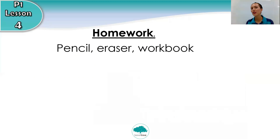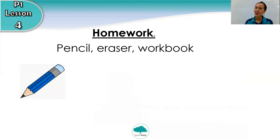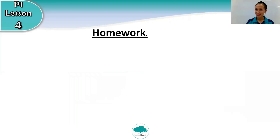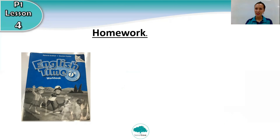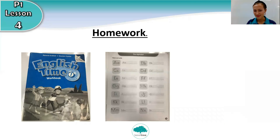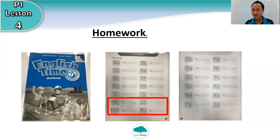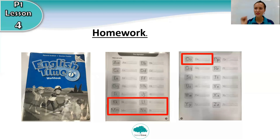It's time for your homework. I want you to get your pencil, eraser, and your workbook. If you have your workbook ready, go to this page. We are going to write the letters K, L, M, and N. If we are finished, go to the next page and write the letter O. So we are going to write five letters: K, L, M, N, and O.